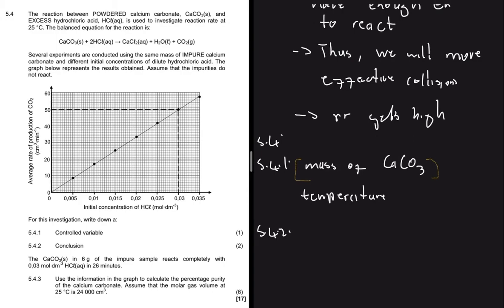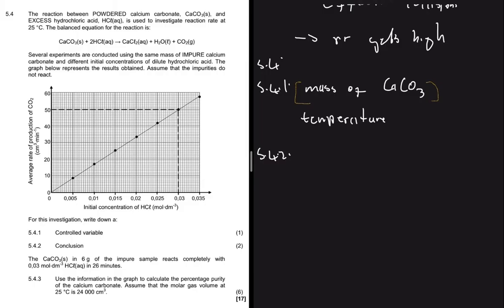Looking at the graph: as the initial concentration of HCl increases on the x-axis, the average rate of production of CO₂ also increases on the y-axis. CO₂ is our product, so this means concentration is directly proportional to reaction rate. As we increase the concentration of HCl, the average rate of production of CO₂ increases, meaning the reaction rate is higher.